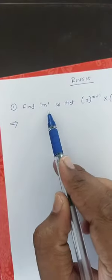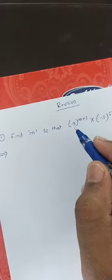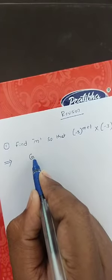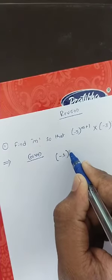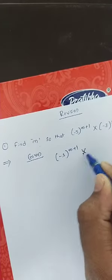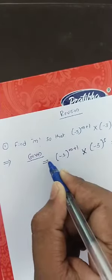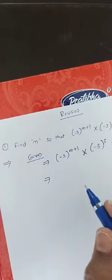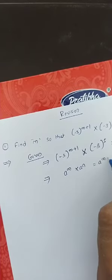See here, the first question in the revision part. Find m so that (-3)^(m+1) × (-3)^5 = (-3)^7. This is your given expression. We have to use the formula: a^m × a^n = a^(m+n).